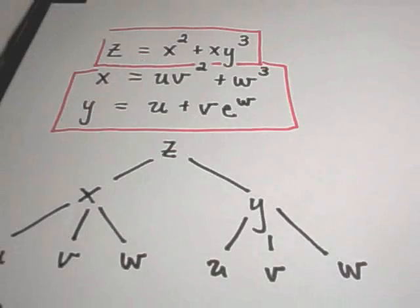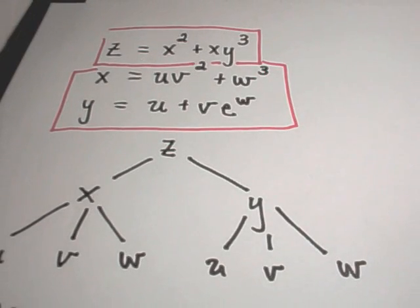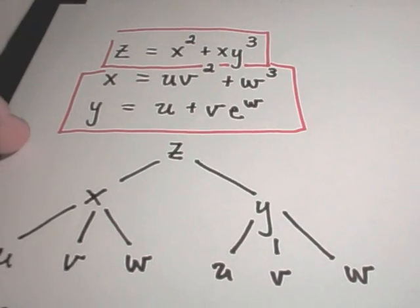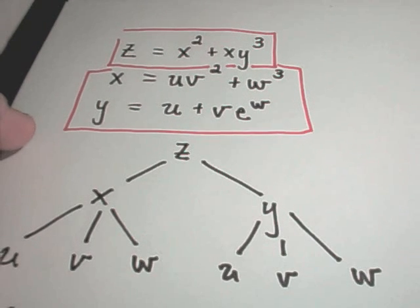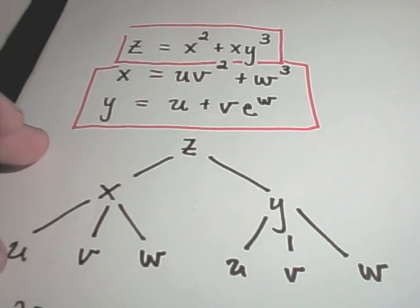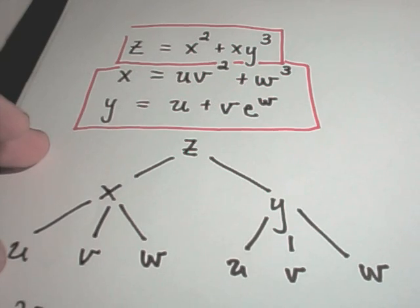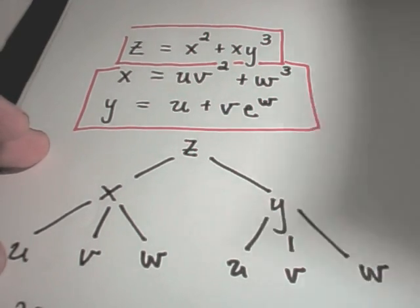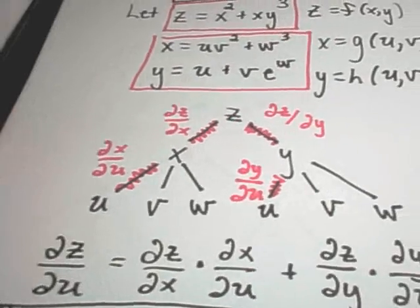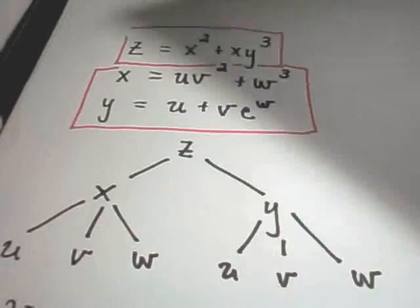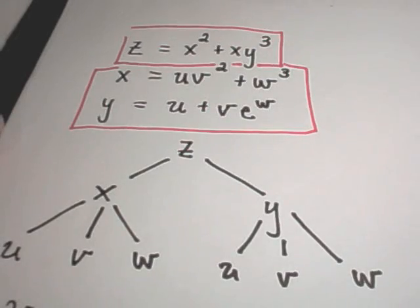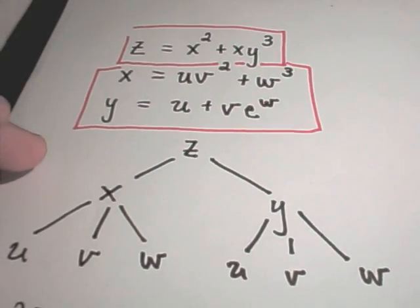In this video, I'm going to finish off part two of the generalized chain rule. I'm going to finish off the examples that I was working on and continue finding the other partial derivatives. If you want to see part one where I go through all the details, there should be another video floating around.